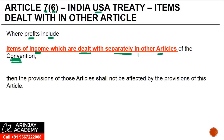Note that the dealing has to be in other articles of the convention. If it is in the Income Tax Act — the domestic law provision of the source state — then this is not relevant. The item of income should be dealt with in some other article of the convention. If it is not dealt with there, then if it is a business profit it will come back to Article 7, and the provisions of those articles shall not be affected by the provisions of this article.